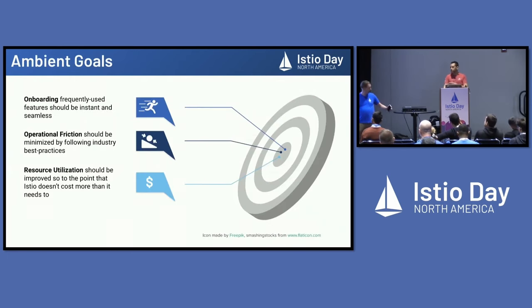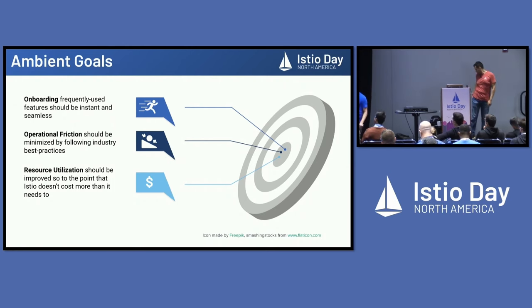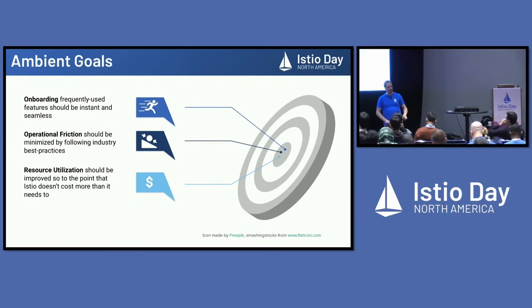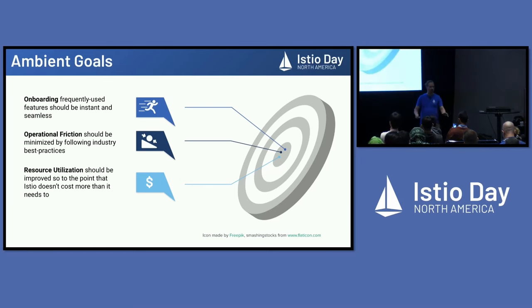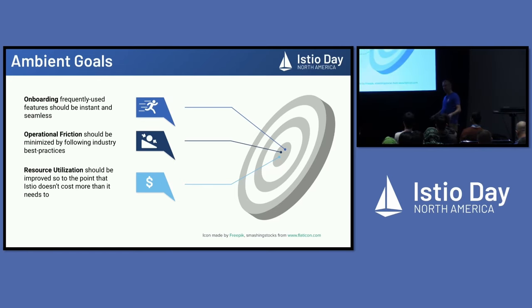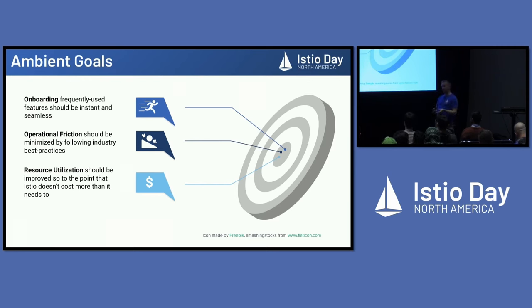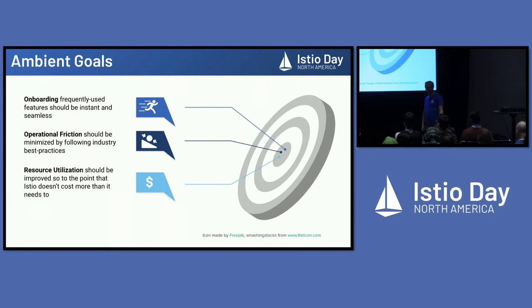You all heard from John this morning about Ambient Mesh and its architecture — I'm not going to dive deep into that. I do want to talk about our objectives in building Ambient. They were threefold: we wanted to make onboarding easier, operations easier, and resource utilization on your cluster easier. For this talk, we're only going to be talking about that middle goal — reducing operational friction. But that's not all there is to Ambient.